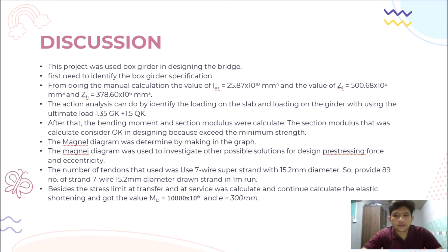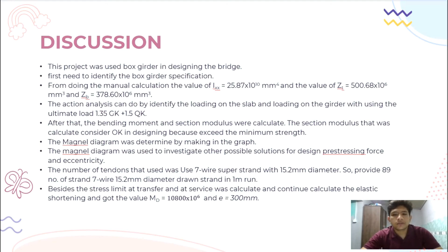My name is Tuan Muhammad Ali Fazlan bin Tuan Mustafa. I will continue with the overall discussion of this project. This project uses a box girder in designing the bridge. From the manual calculation, the cross-section area and the value of ZT were identified. The loading on the slab and loading on the girder were analysed using the ultimate load combination 1.35GK + 1.5QK. The bending moment and section modulus were calculated and found acceptable. The Magnet diagram was used to determine a feasible pre-stress force and eccentricity. The number of tendons used was 89 strands of 7-wire super-strand at 15.2mm diameter.